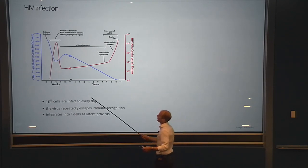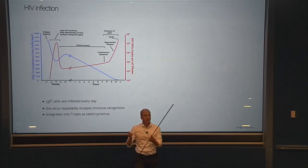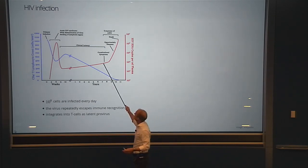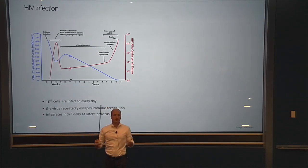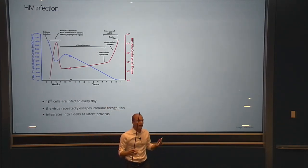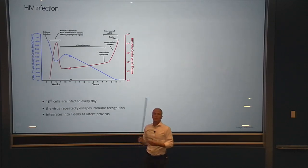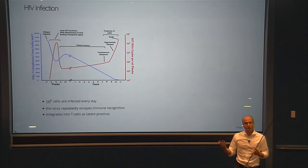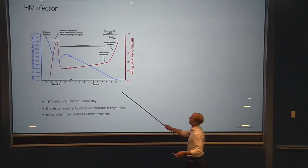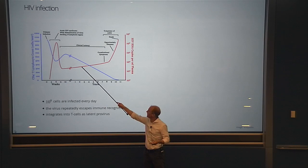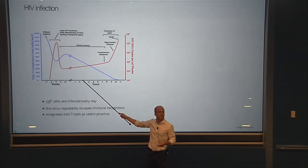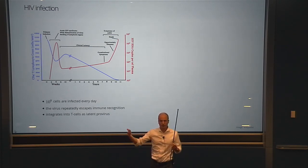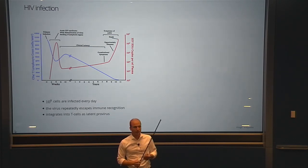CD4-positive cells go down as the virus keeps replicating, because those are exactly the cells the virus infects. Once the count falls below a certain level, the immune system can no longer defend the person against all kinds of infections, and the HIV-positive person will eventually die from opportunistic infections unless there's treatment. Modern treatment will bring the viral load down to undetectable, and people can live indefinitely on effective antiviral treatment.